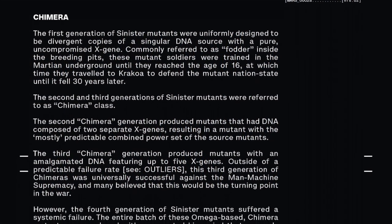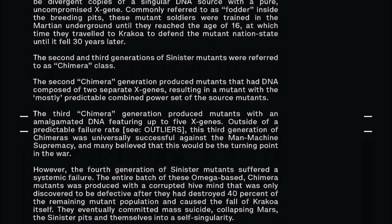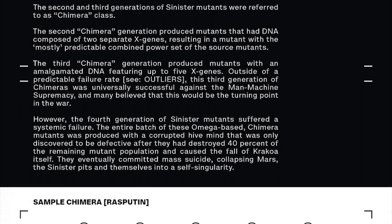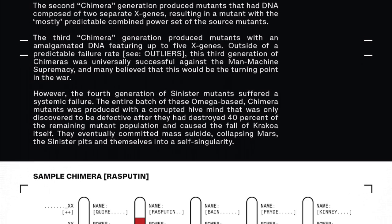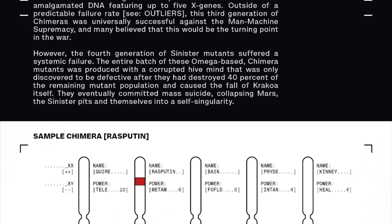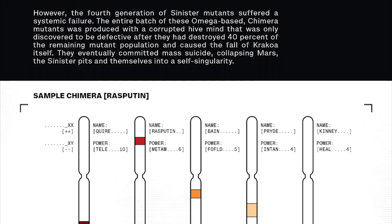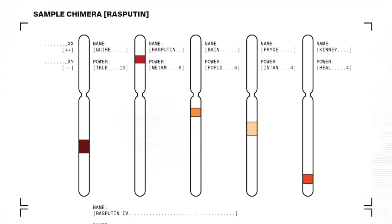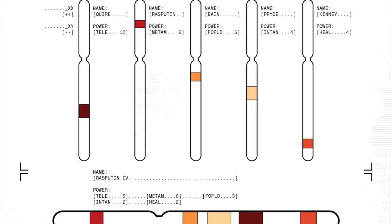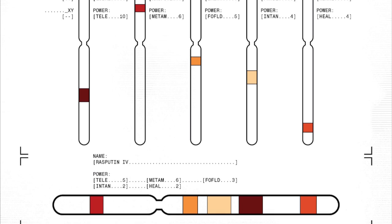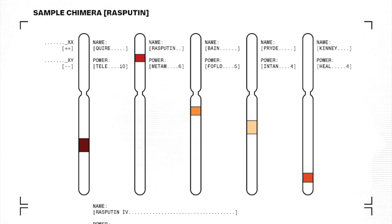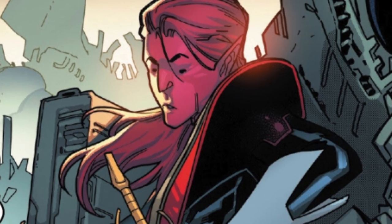The mutants bred in this program were made to serve different militaristic and tactical purposes on Mars, and sent to defend Krakoa before it fell. The first generation of the Sinister line were clones of a singular DNA source, referred to as fodder in the breeding pits of Mars. Did the opening sequence in House of X Issue 1 take place on Mars in one such breeding pit? Could those have been copies of Gene and Scott after all? Subsequent generations in the Sinister line were called Chimera-class for being hybrids of various DNA sources. The second generation was made up of mostly predictable combined power sets of two source mutants. The third generation were hybrids of five X genes and proved very effective against the man-machine supremacy, but produced significantly more outliers. Rasputin and Cardinal are both of the third generation, but where Rasputin displayed efficiency as a hybrid of DNA samples from Quentin Quire, Piotr Rasputin aka Colossus, Eunice the Untouchable, Kitty Pryde, and Laura Kinney aka X-23, Cardinal was an outlier.